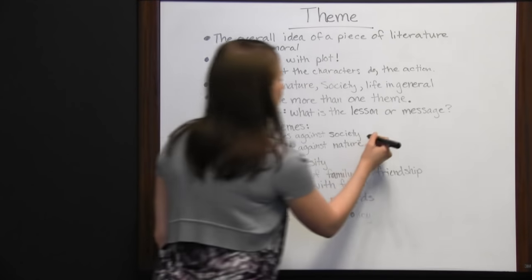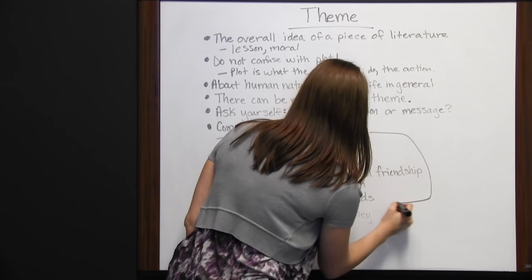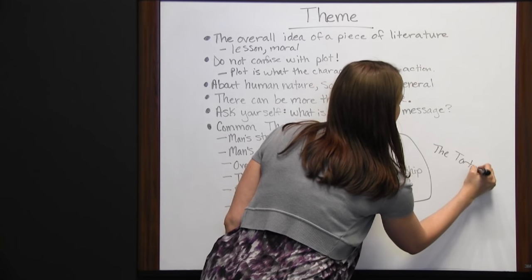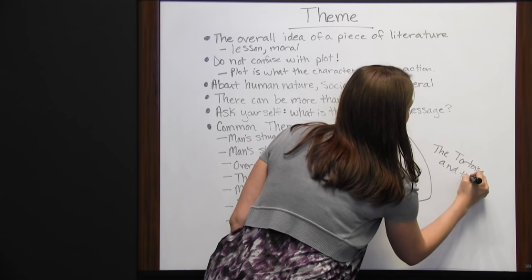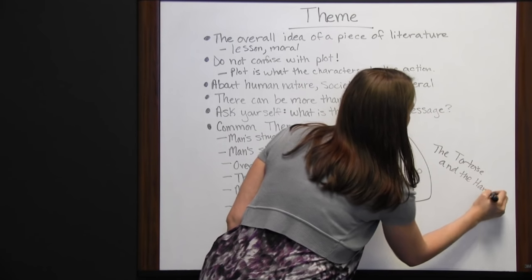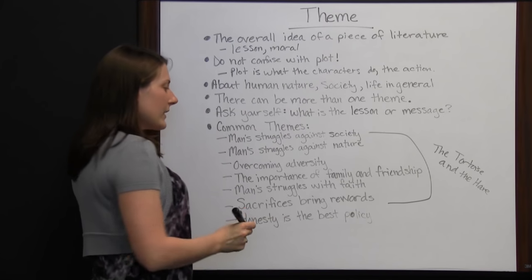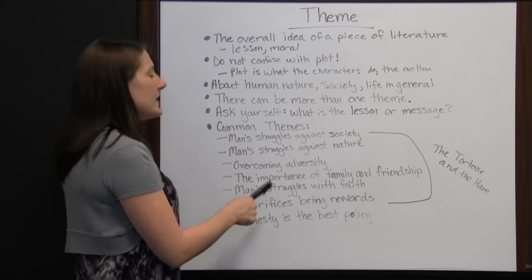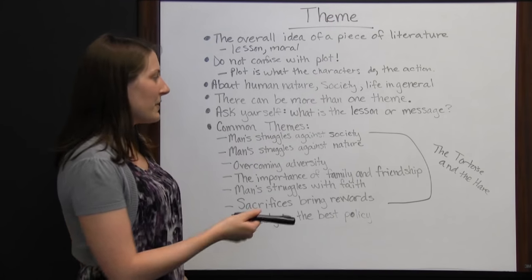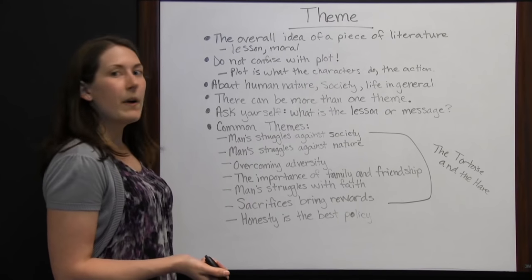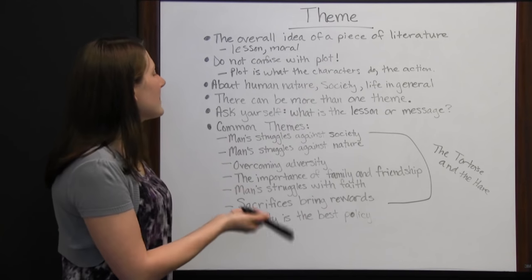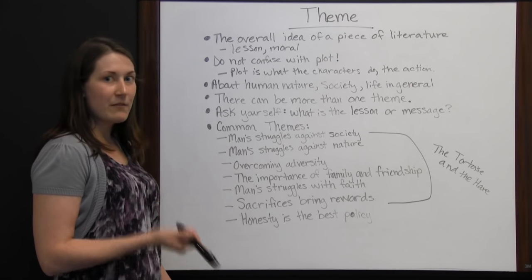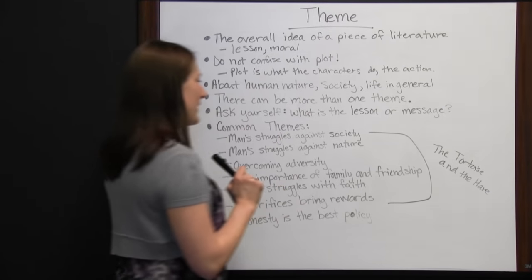Let's look at the story of the tortoise and the hare from Aesop's fables. This shows that there can definitely be more than one theme for one story. All of these themes may not be what Aesop had in mind, but they're all visible in the story.